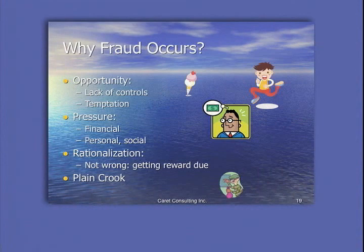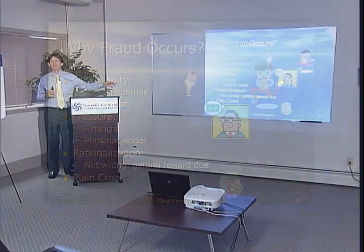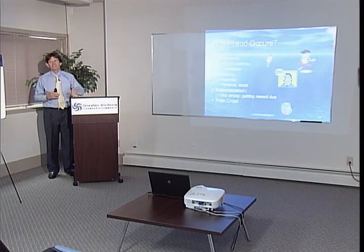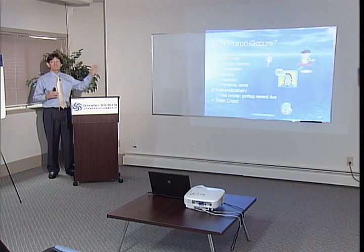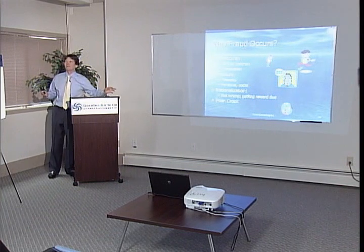The Fraud Triangle says that all three factors — opportunity, pressure, and rationalization — have to occur. My feeling is just one has to occur, or the person is a plain crook. They don't need any excuse. They don't need rationalization. They're just going to take it no matter what. They'll find a way.